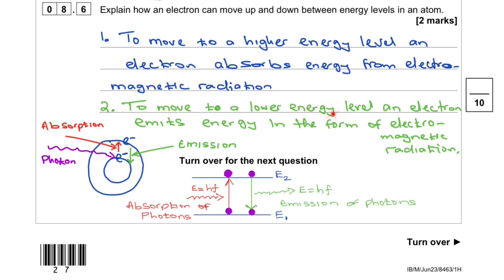To move to a lower energy level, an electron emits energy in the form of electromagnetic radiation and that's emission.